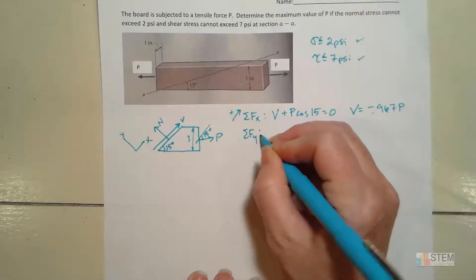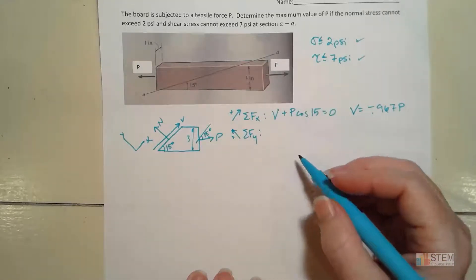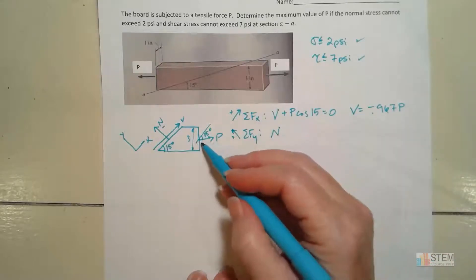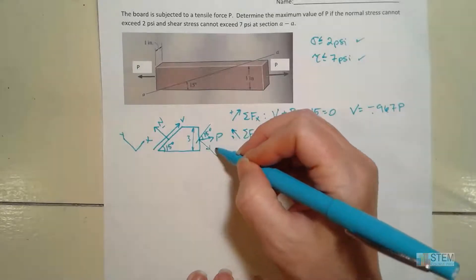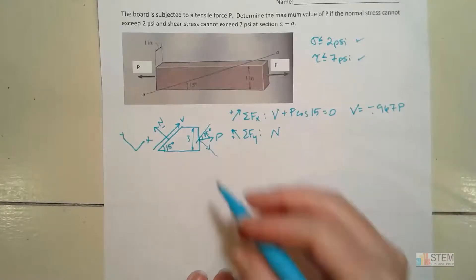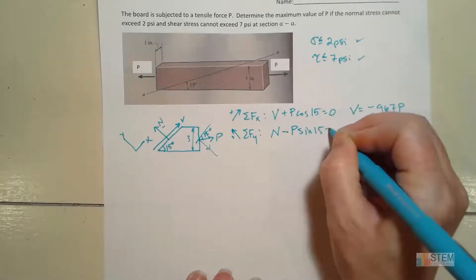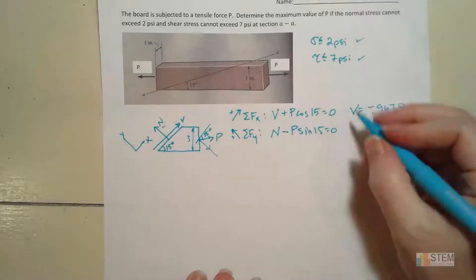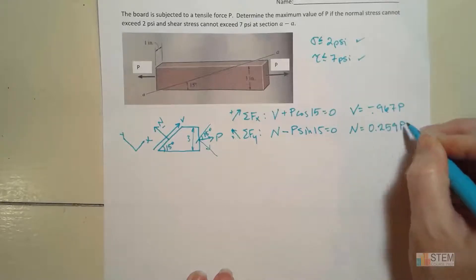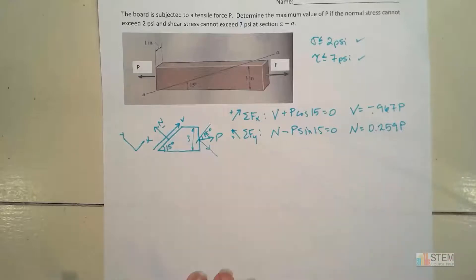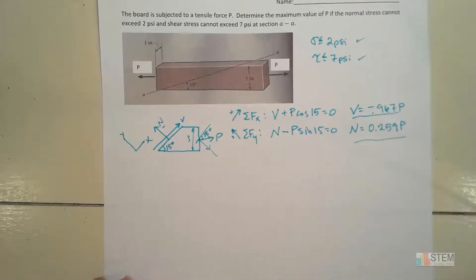Next, I'm going to do the Y direction, with positive going up and to the left. For this equation we're going to have N, and then the Y component of P is going down, so we have minus P sine 15 equals zero. Solving for N gives us positive 0.259 P. Positive here just means we chose the correct direction. So now I have equations for V and N in terms of P.